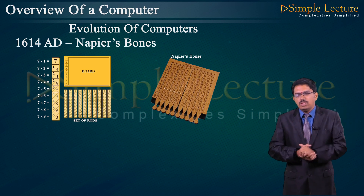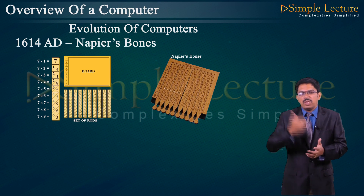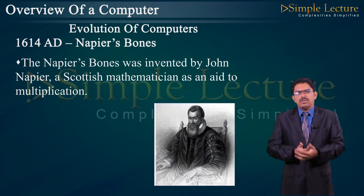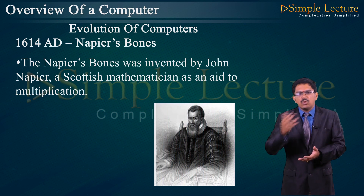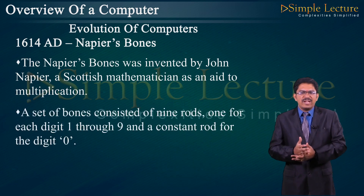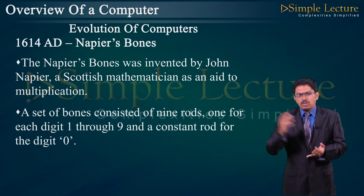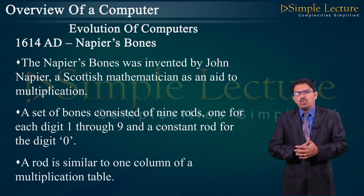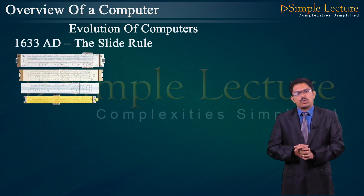For example, 6 × 2 = 12. Napier Bones was used for multiplication purposes. It was invented by John Napier, a Scottish mathematician. A set of bones consists of 9 rods, one for each digit 1 through 9, and a constant rod for digit 0. A rod is similar to one column of a multiplication table.